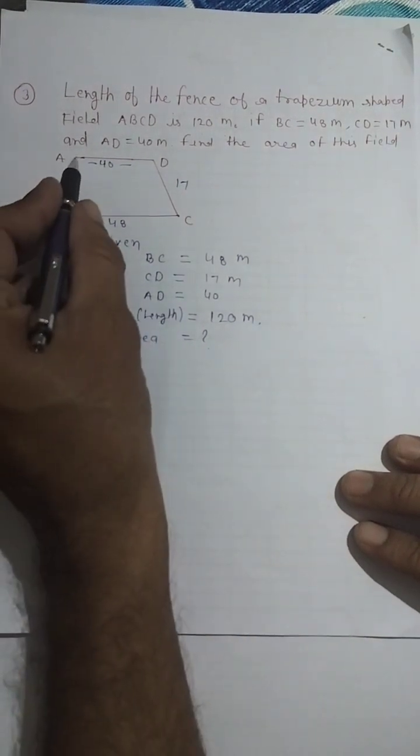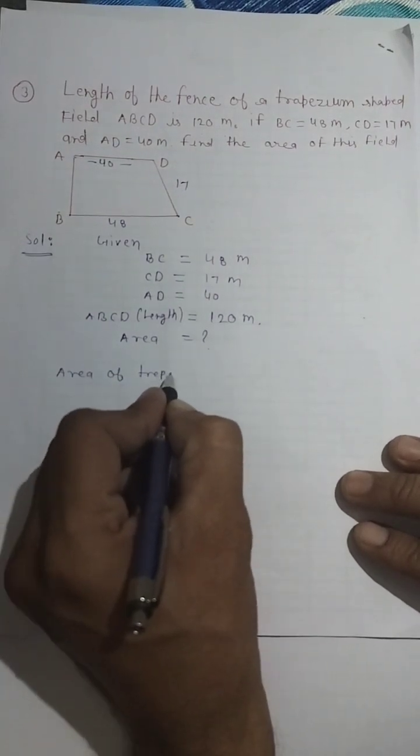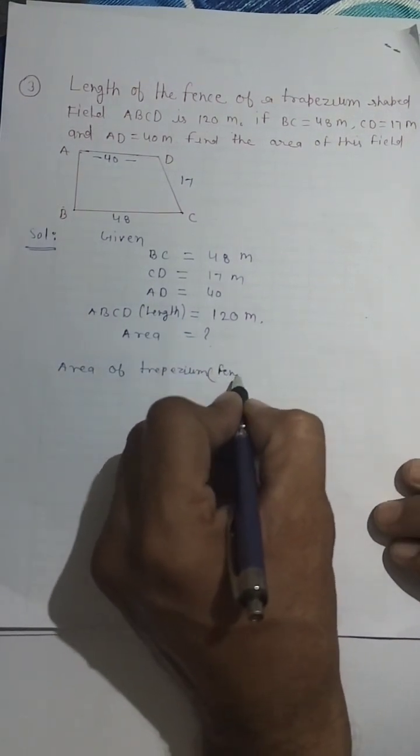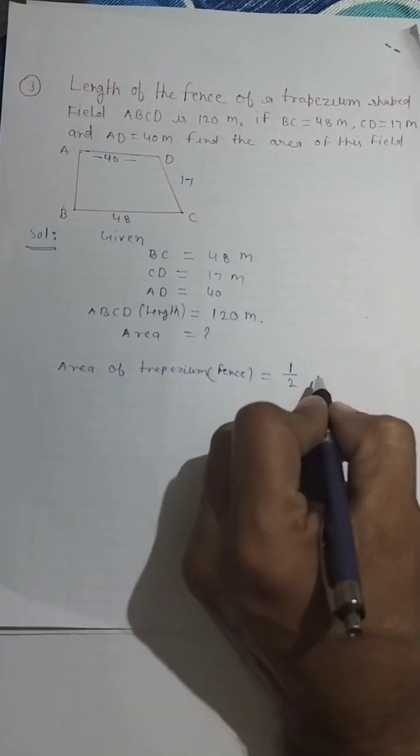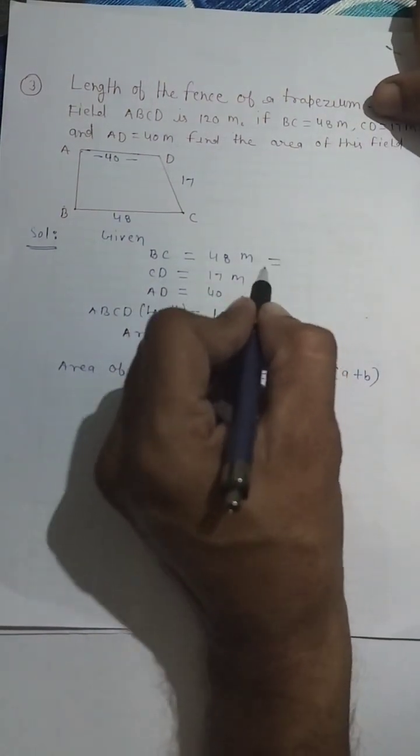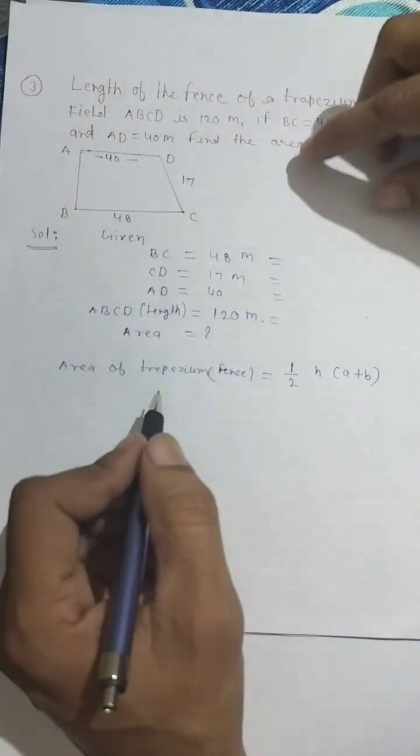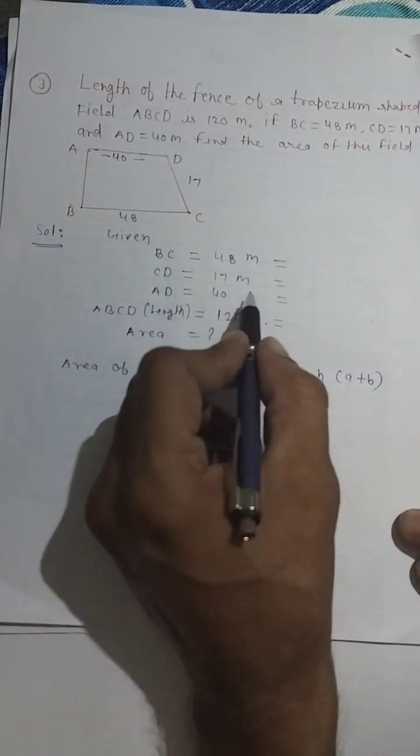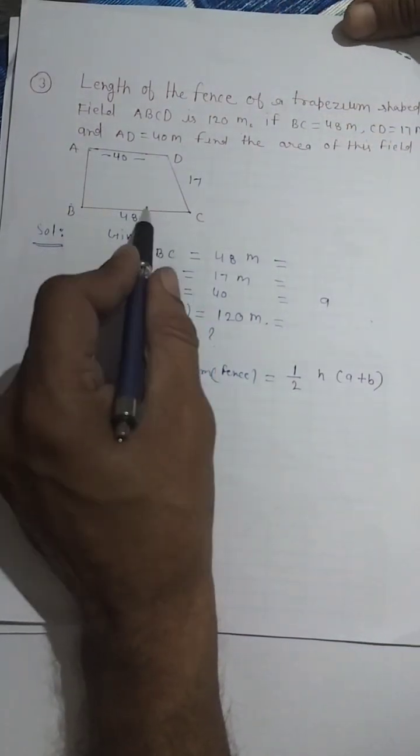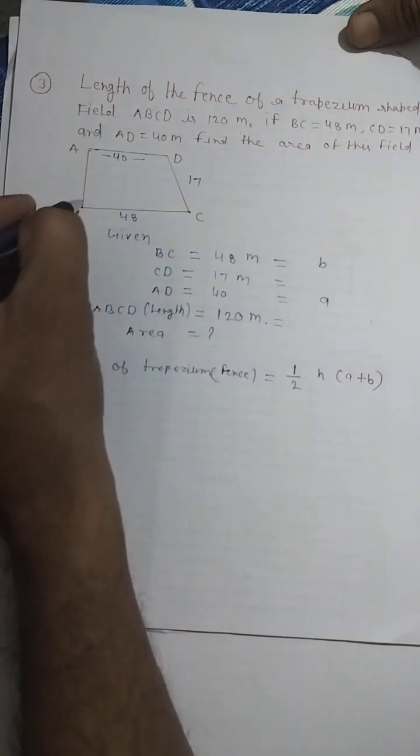We need to find the area. There are two parallel sides, so we will use the area of trapezium formula. The formula is one by two, H, into A plus B. The parallel sides are AD and BC, which we will call A and B.